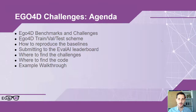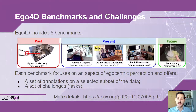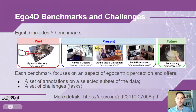Ego4D includes five different benchmarks: episodic memory, which focuses on understanding the past; hands and objects; audiovisual diarization; social interaction, which deals with understanding the present; and forecasting, which aims to predict the future. Each benchmark focuses on a different aspect of egocentric perception and offers a set of annotations on a selected subset of data and a set of challenges or tasks to engage with.